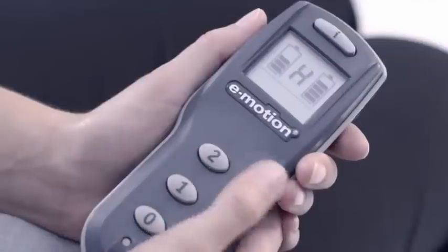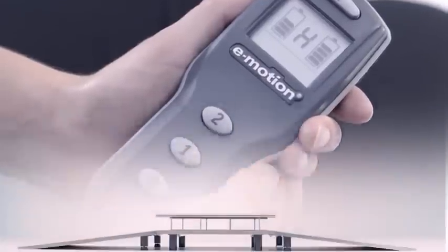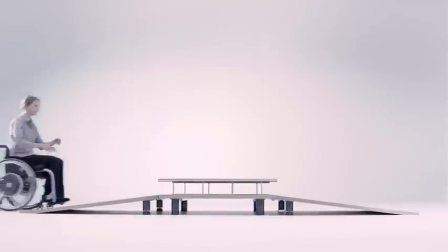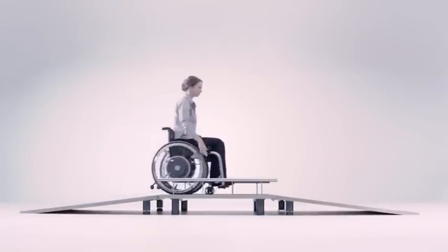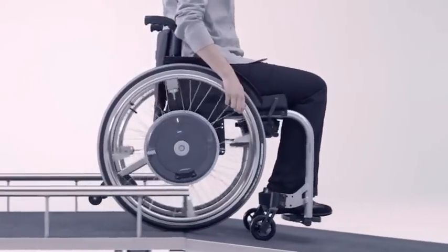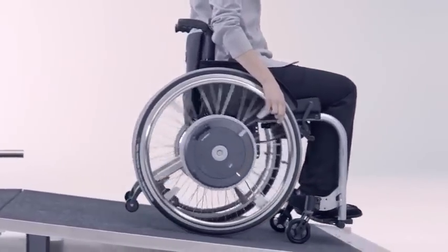A rollback delay activated at the push of a button keeps you safely in position when going uphill. When travelling downhill, the power assistance also boosts the braking pulse to give you greater safety.